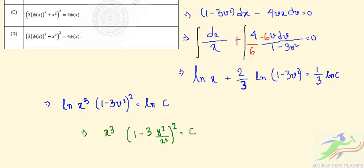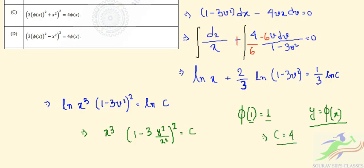If we apply the initial condition phi(1) equal to 1, meaning x equal to 1 and y equal to 1, we can substitute into the general solution. From here, we can find that c equal to 4.